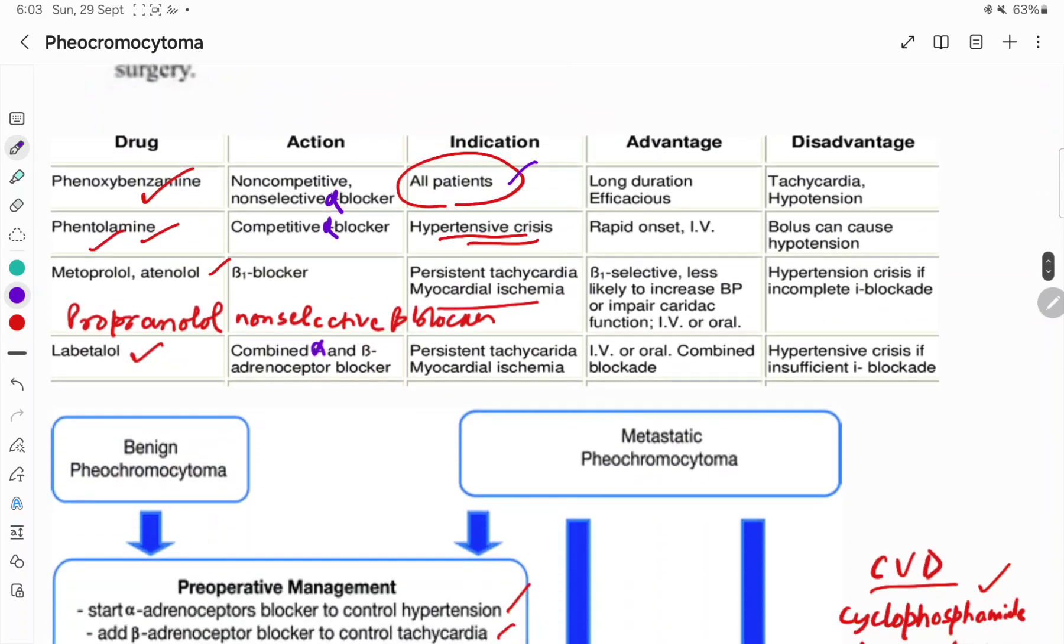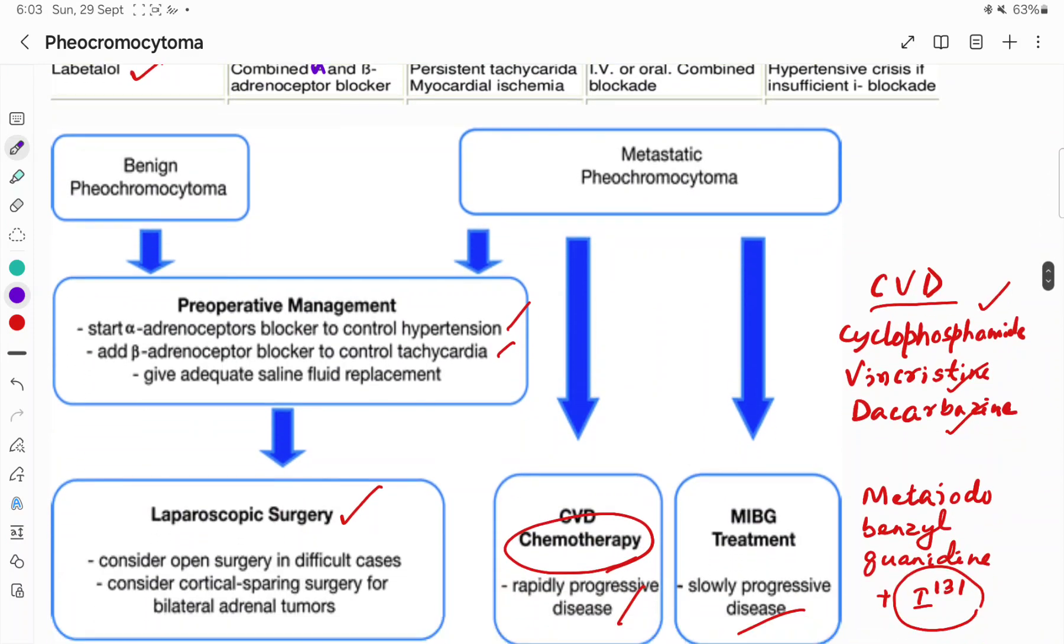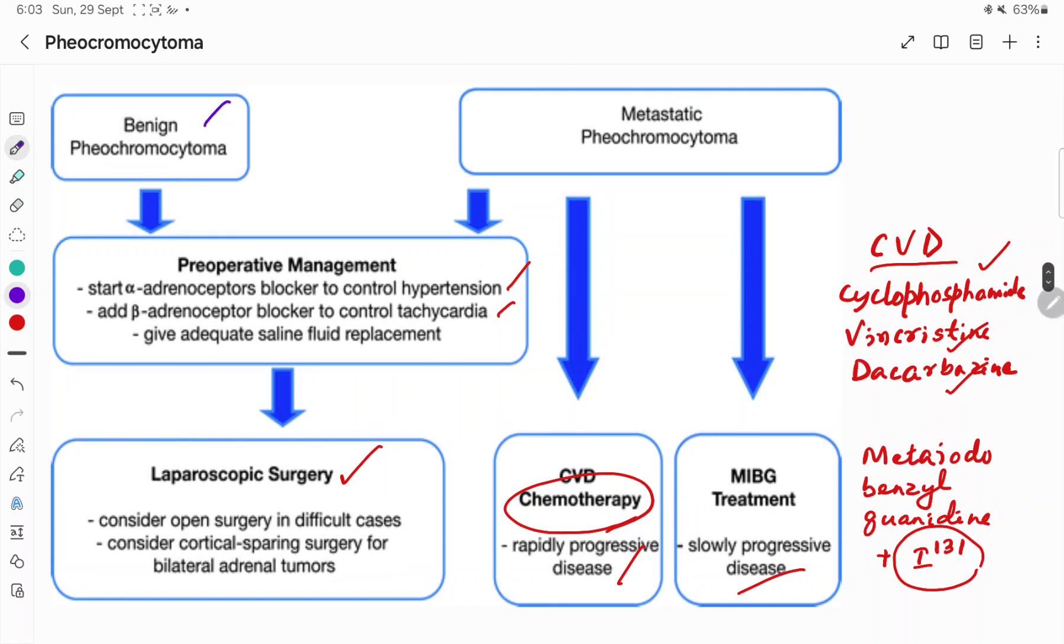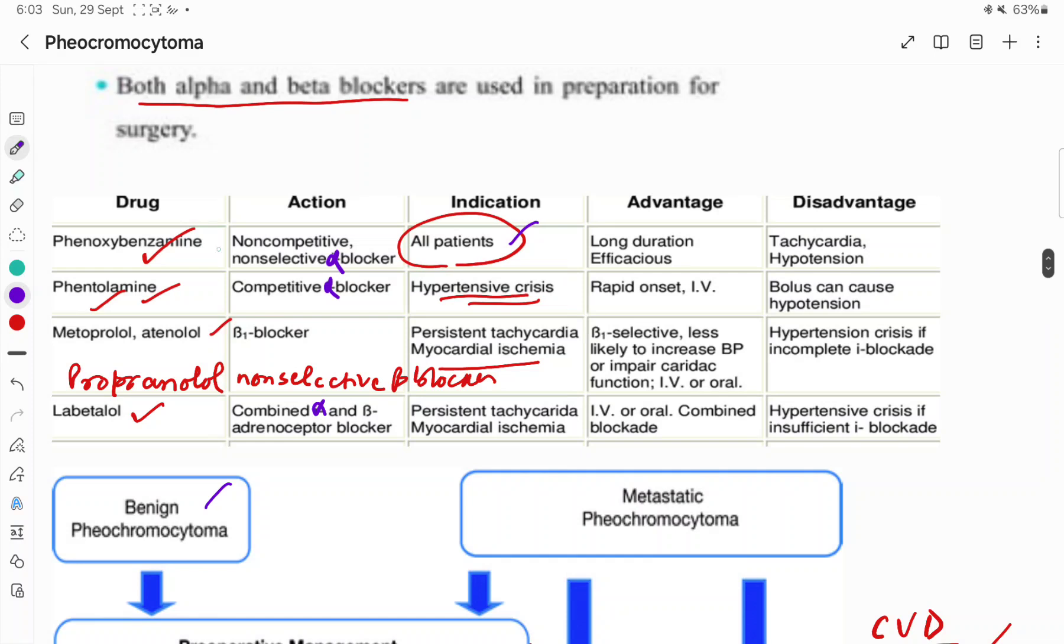For preoperative management in case of benign pheochromocytoma, start alpha blockers to control the hypertension. Alpha blockers like phenoxybenzamine or phentolamine can be used. Phenoxybenzamine is a non-competitive non-selective alpha blocker, whereas phentolamine is a competitive non-selective alpha blocker. Phenoxybenzamine can be used in all patients, phentolamine can be used in case of hypertensive crisis.